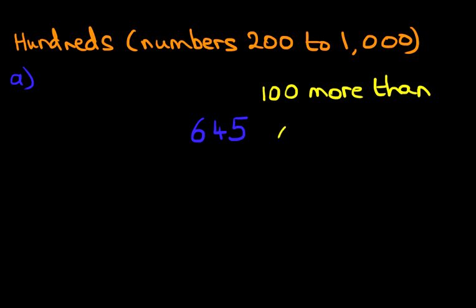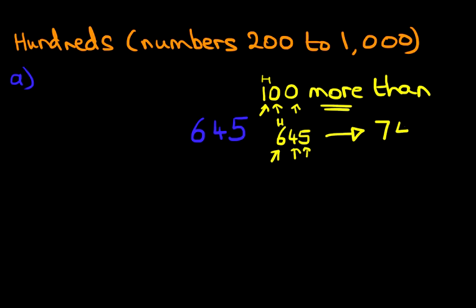The first stage is to write the number down again. Are we going to go forwards or backwards? Well, it's more than, so therefore we're going to go forwards. The 5 and the 4 are not going to change because they're going forwards by 0. As for the 6, that is the hundreds digit, and 1 hundred means it goes forward by 1. 6 counting forwards by 1 is 7. So the answer becomes 745.